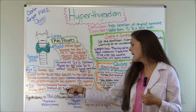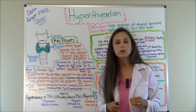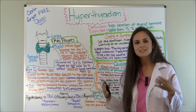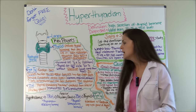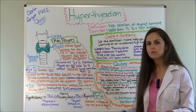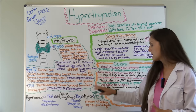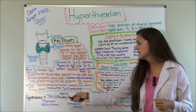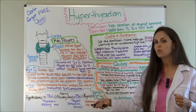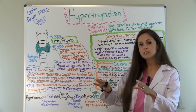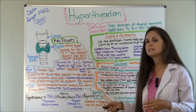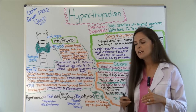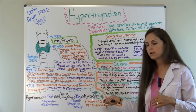TSH — thyroid stimulating hormone — is produced by the anterior pituitary gland. Whenever it is released, it stimulates the thyroid gland to release thyroid hormones T3 and T4. In the negative feedback loop: the hypothalamus releases TRH (thyrotropin releasing hormone), the anterior pituitary gland senses that and releases TSH, and then whenever the thyroid senses TSH has been released, it will secrete T3 and T4.